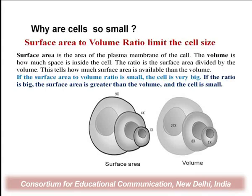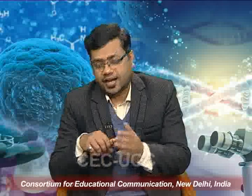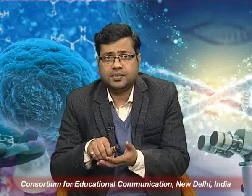Why are cells so small? Because the surface area to volume ratio limits the cell size. The surface area is the outer surface layer — like the plasma membrane covering the cell. Inside the surface area there is a volume. Surface area to volume ratio limits cell size: if the surface area is greater than the volume, the cell size is small. If the surface area to volume ratio is less, then the cell is very big.